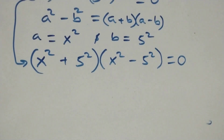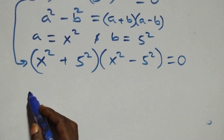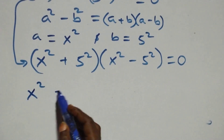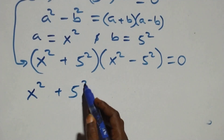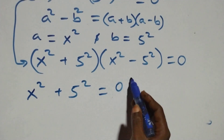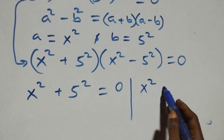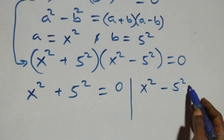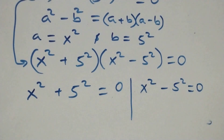This is the right hand side here. Which implies we have two possible cases. The first one: x squared plus 5 squared equals to 0, and the second: x squared minus 5 squared equals to 0.